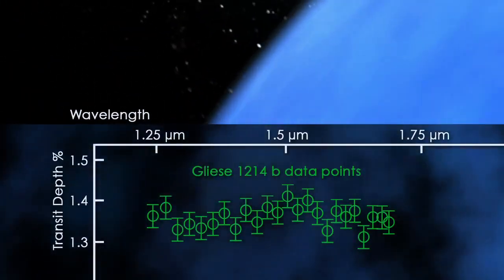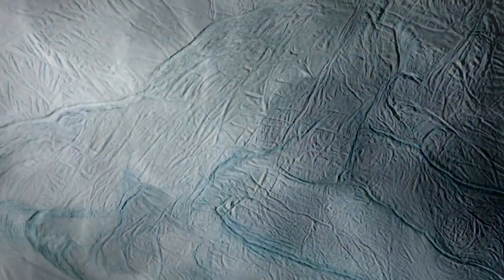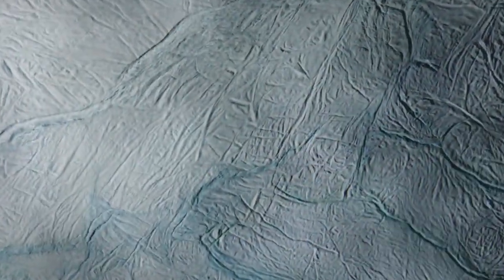By contrast, planet GLISA-1214b is a comparatively inviting water world. Its nearly flat transit depth curve hints at a shallow atmosphere of pure steam enveloping an ocean thousands of kilometers deep, with an interior of hot ice, water solidified by extreme pressure rather than cold.